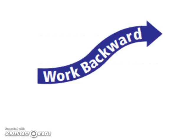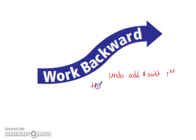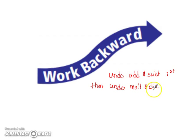To do this, we need to work backwards. As a helpful guide, think of undoing: undo addition and subtraction first, then undo multiplication and division. You're going to use your inverse operations for addition and subtraction first, then undo multiplication and division. Keep in mind, if there are parentheses, that comes after multiplication and division. You're basically doing your order of operations backwards.